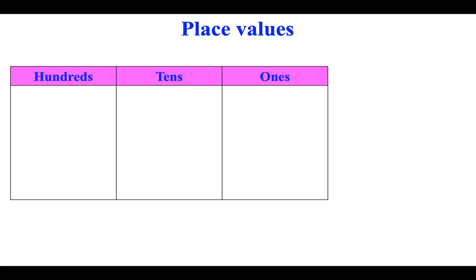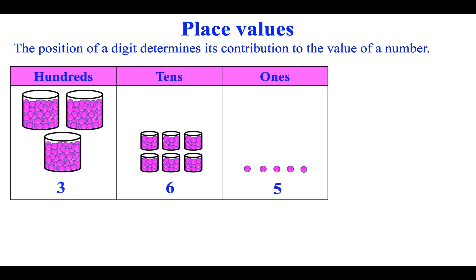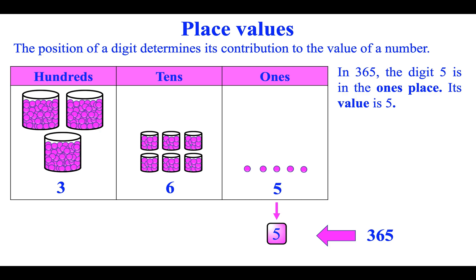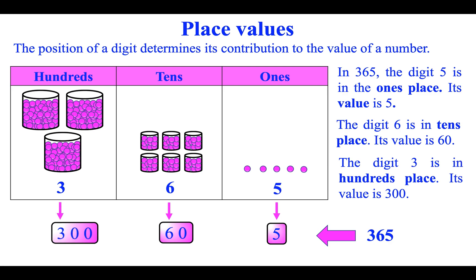Place values. The position of a digit determines its contribution to the value of a number. In three hundred sixty-five, the digit five is in the ones place — its value is five. The digit six is in the tens place — its value is sixty. The digit three is in the hundreds place — its value is three hundred.